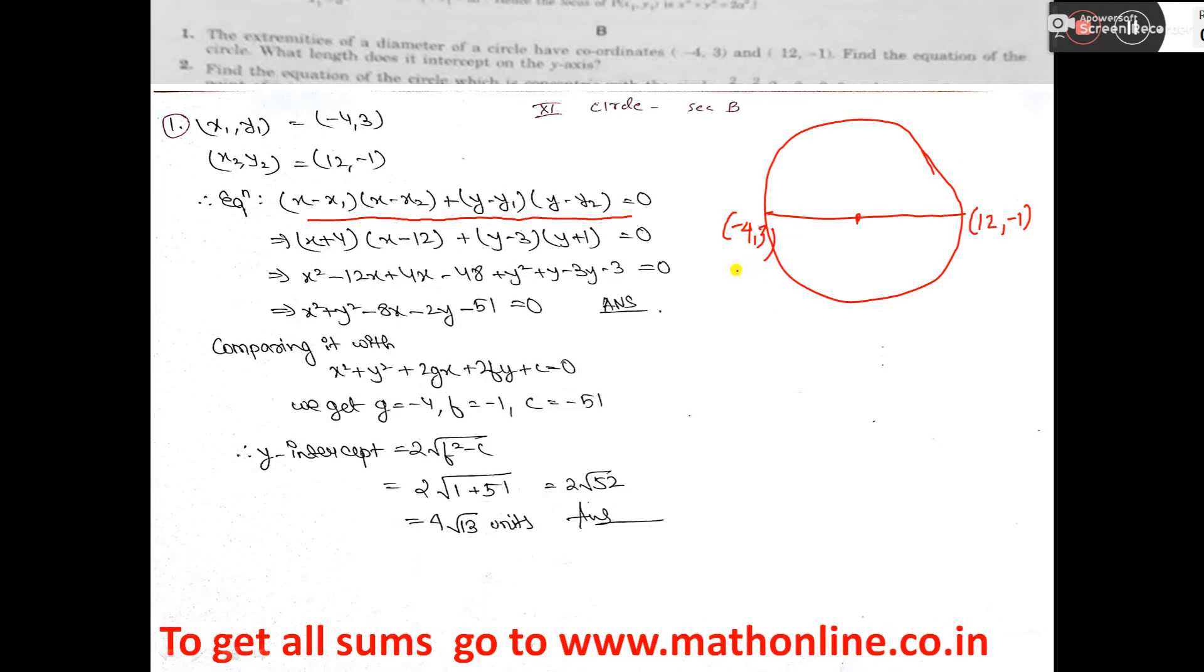So this one you consider x1, y1 and this one you consider x2, y2. See here it is written also. Now put the values x1, x2, y1, y2 and multiply to bring it in this form: x² + y² - 8x - 2y - 51 = 0. Now this is the answer.